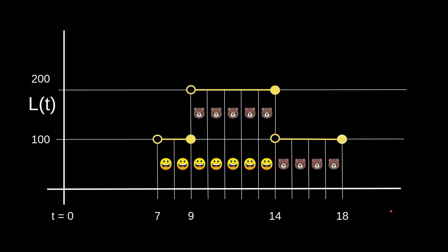We'll start with the same graph as before. Alice stakes 100 tokens at t equals 7. Bob stakes 100 tokens at t equals 9. Alice unstakes at t equals 14, and then Bob unstakes everything at t equals 18. Notice that for t greater than 7 and less than or equal to 14, the amount of tokens staked by Alice is a constant equal to 100.